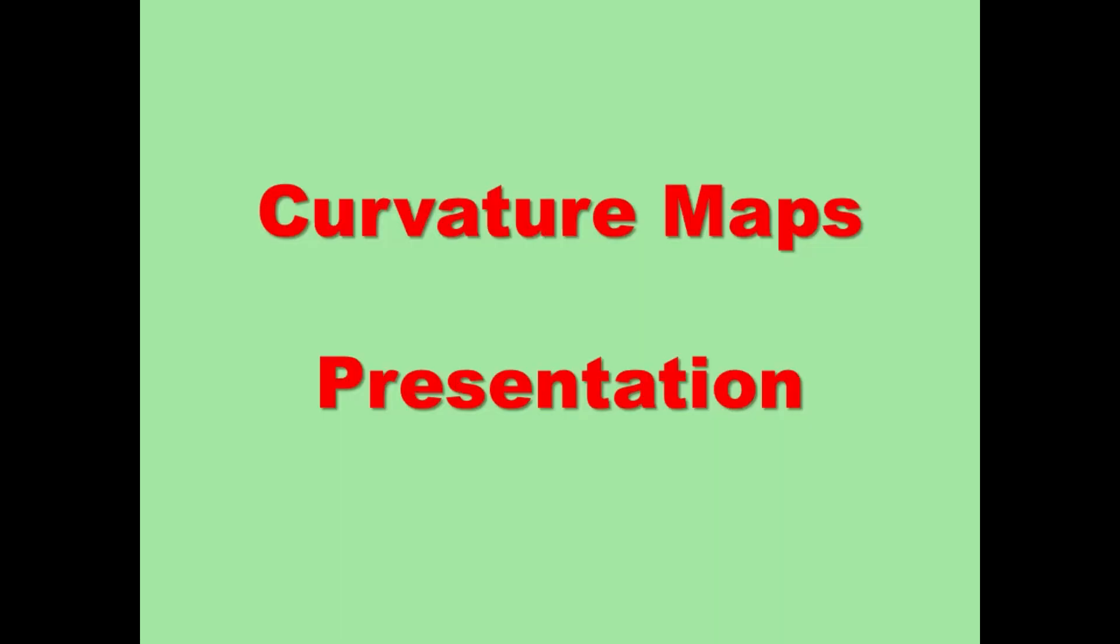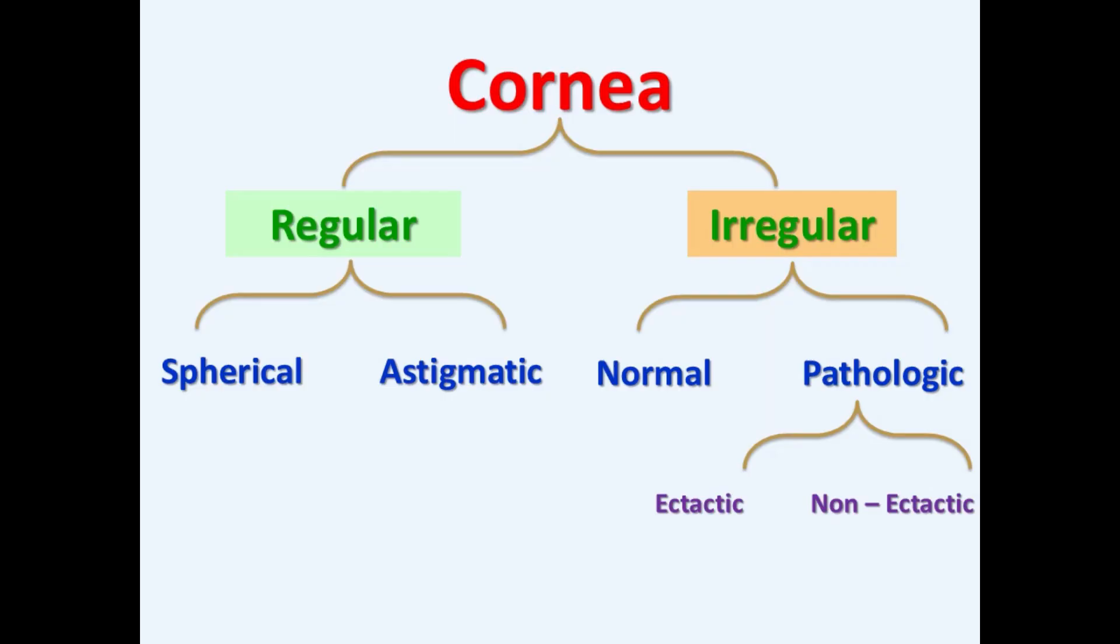Curvature maps presentation. Topographically, corneas are classified into regular or irregular corneas according to power and pattern appearance.